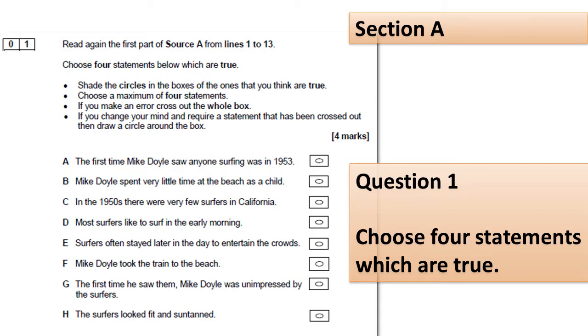Let's start by having a look at the section A reading questions. Question 1 is the true statements question. You're told which source and which lines from that source to get your information from, and you need to choose the four statements from the list that you know to be true. You'll have read those lines really carefully and be absolutely sure that the statements you think are true are supported by the things that you've read before shading in the circles for the four boxes.